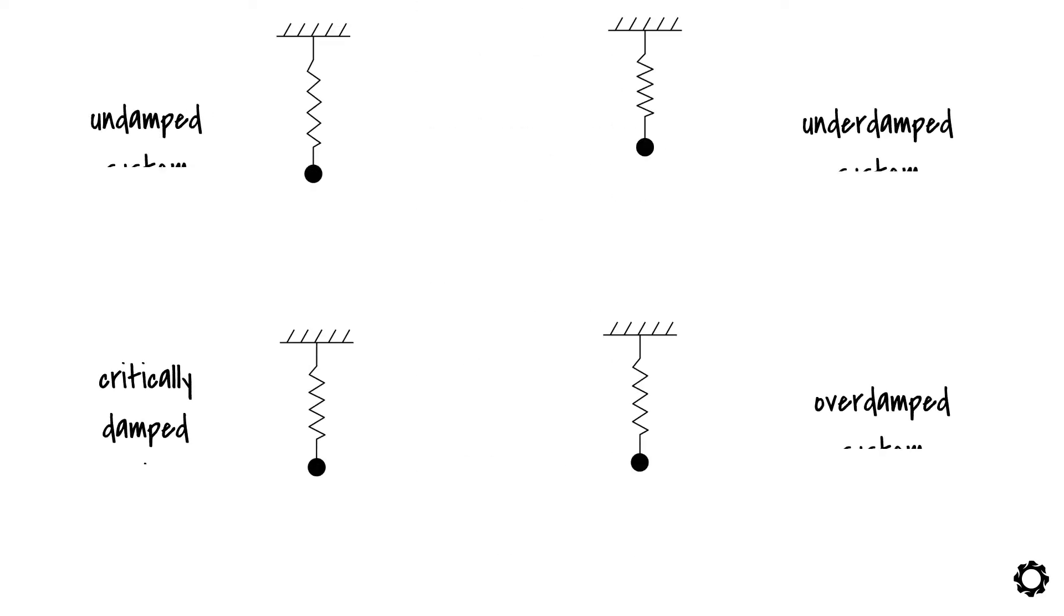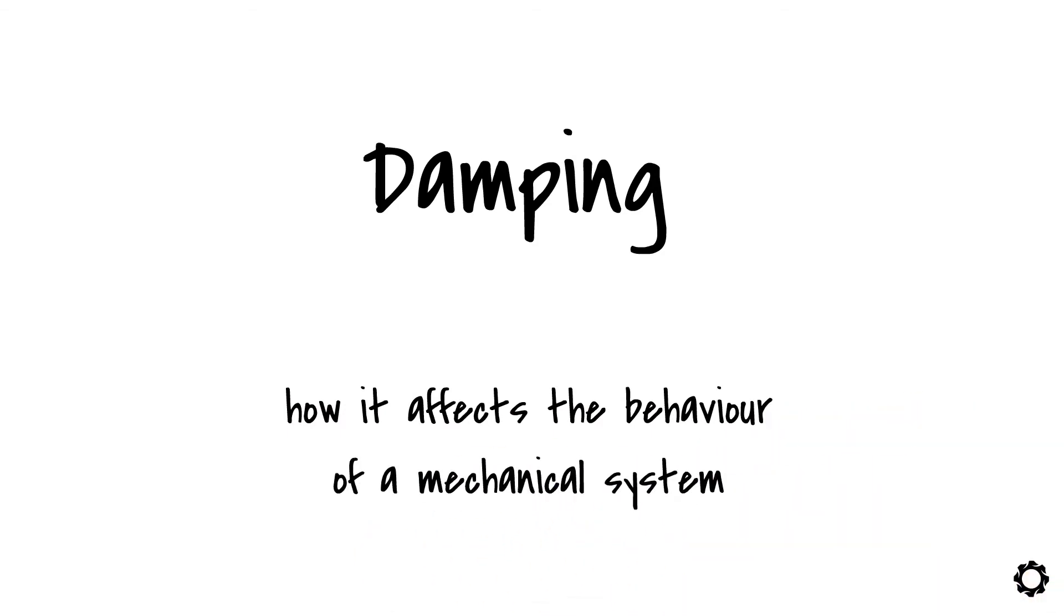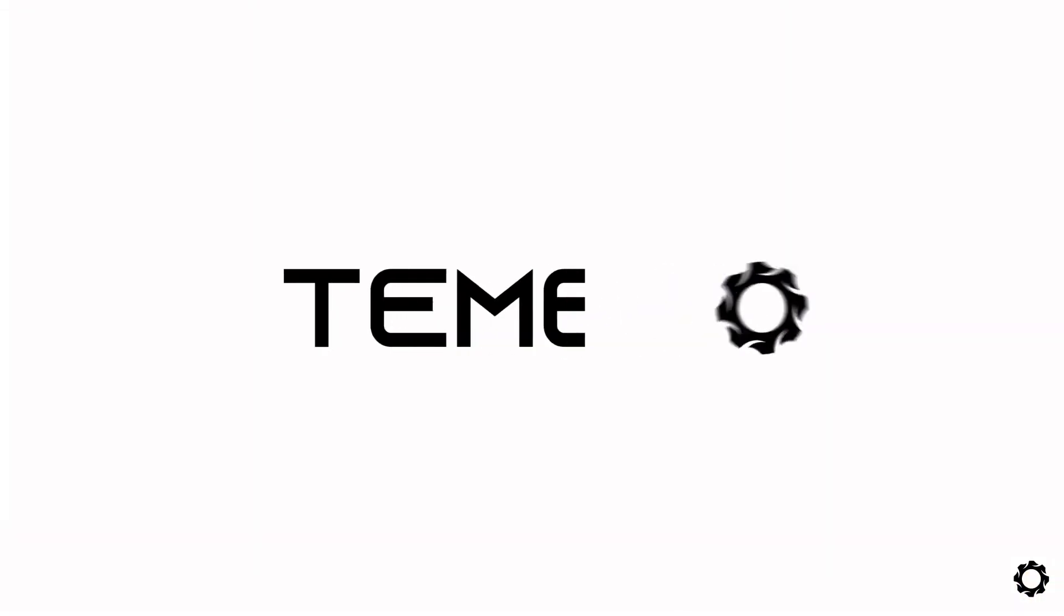You can now see the four cases in action and compare their behavior. Now you get why it's important to know the damping ratio. In another video, I will show you how we can calculate the damping ratio of the mechanical system. Hopefully, you now have a clearer understanding of what is damping and how it affects the behavior of a mechanical system. So, thanks for watching and see you soon.